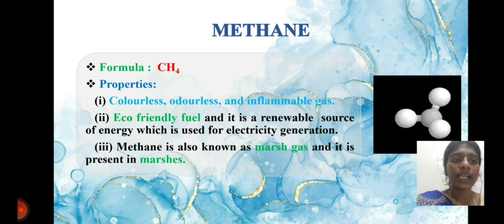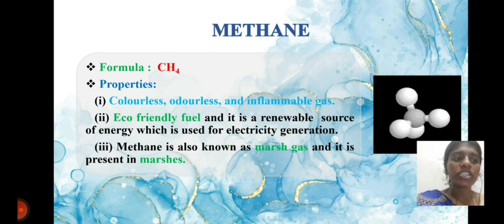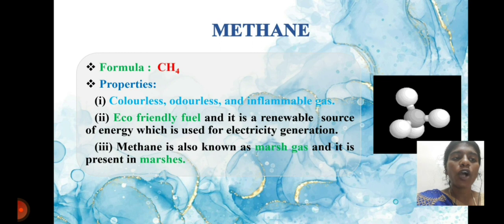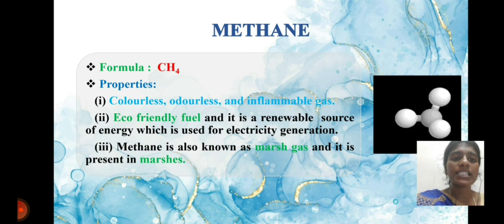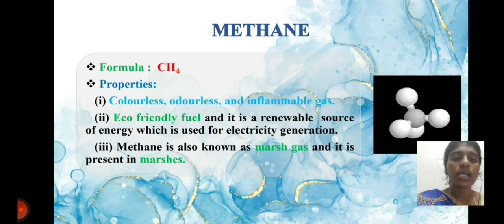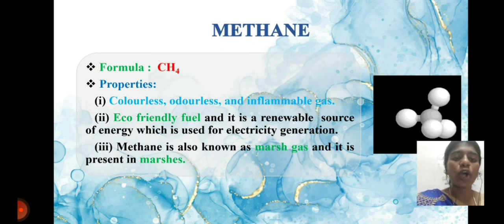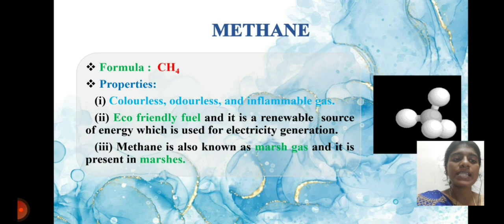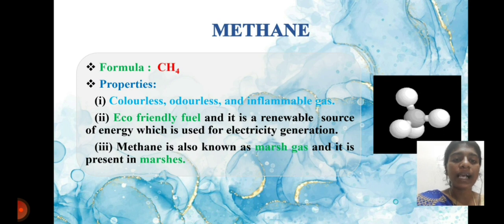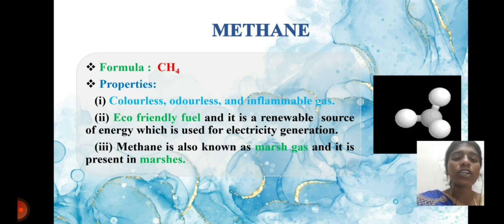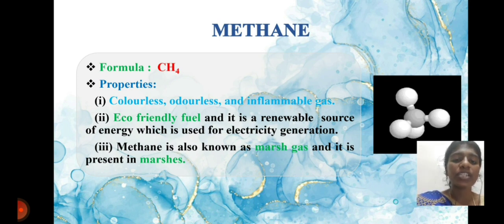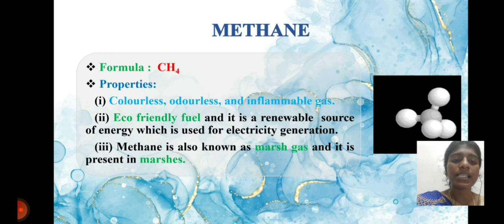The formula for methane is CH4. Its properties: it is a colorless and inflammable gas. It is an eco-friendly fuel and it is found in marsh gas — it is present in marshes.